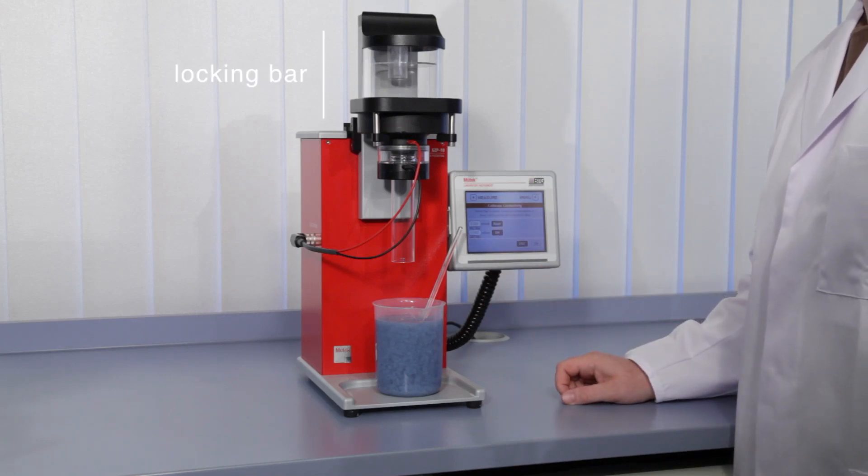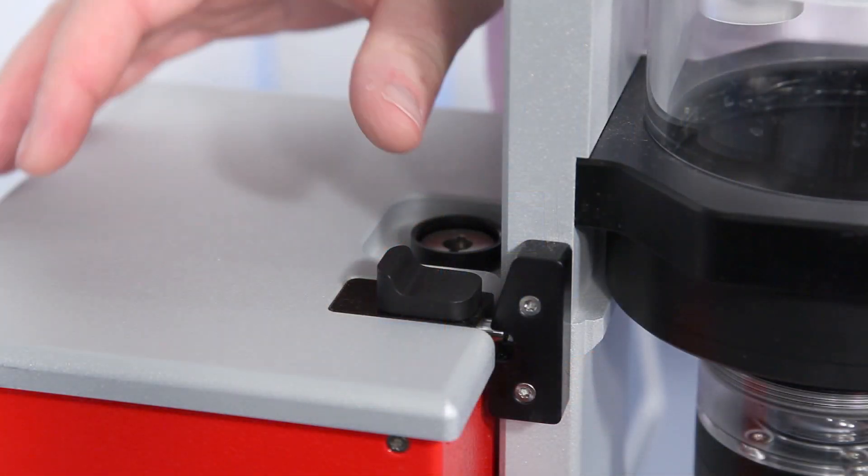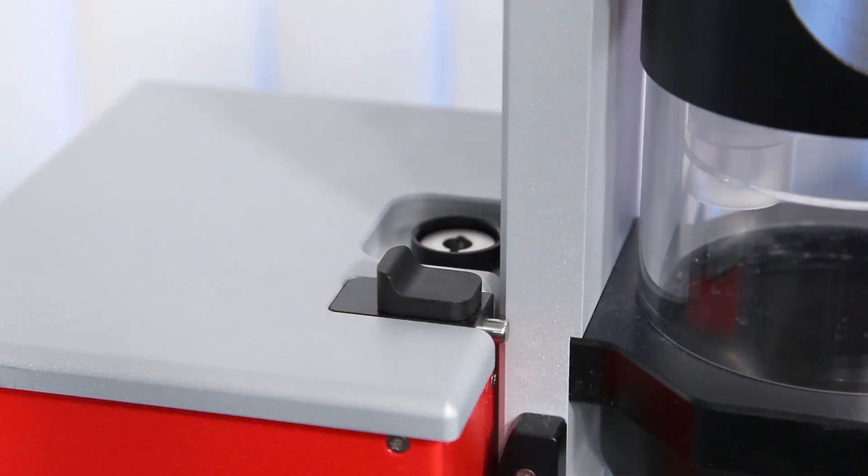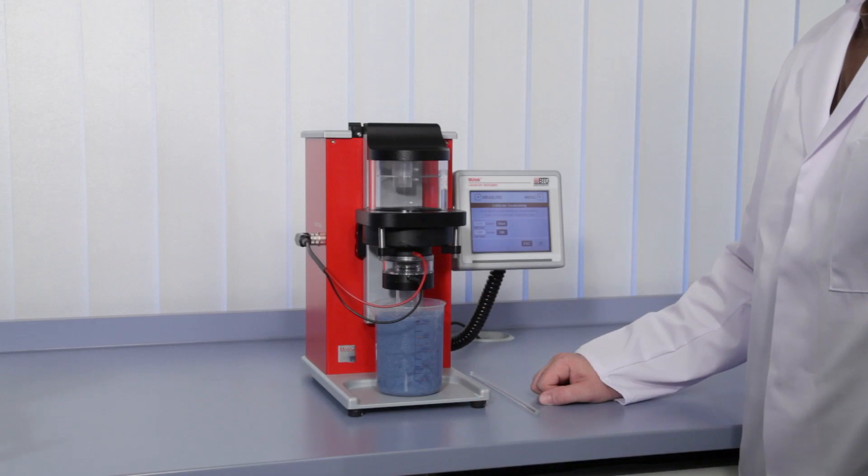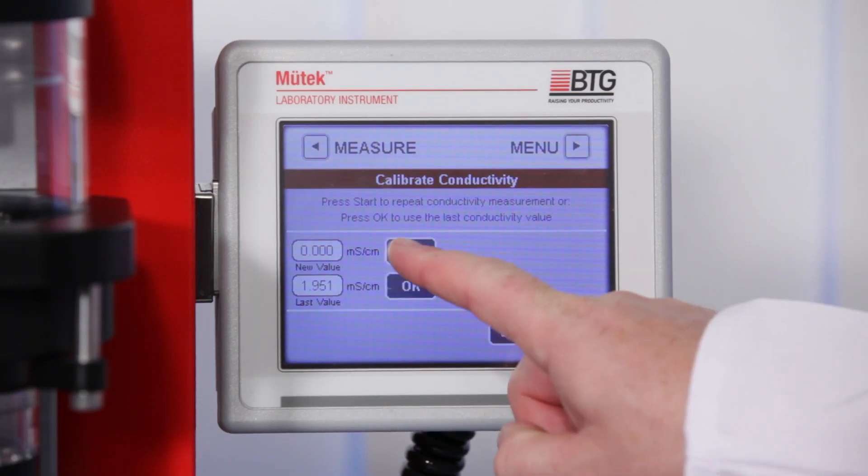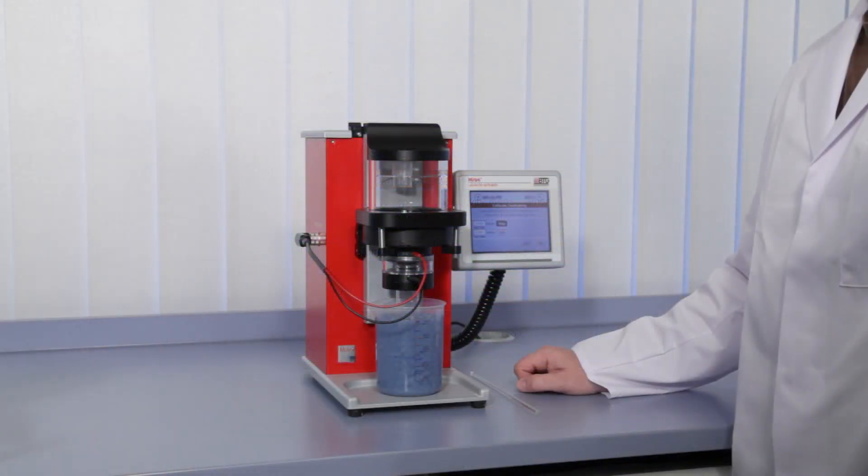Push the locking bar to release and lower the measuring cell. Then, press the Start button and the SZP will perform a conductivity measurement.